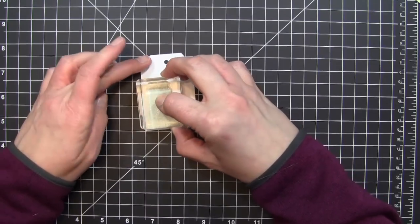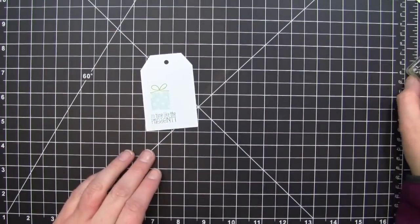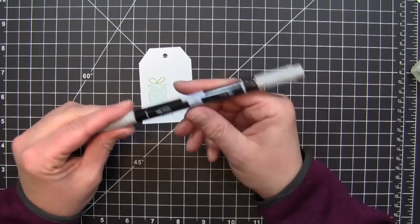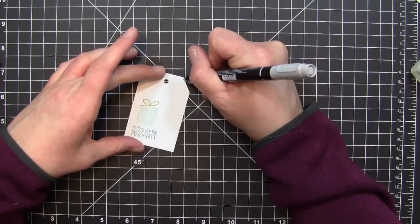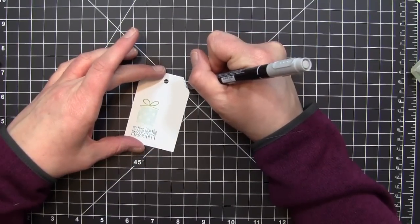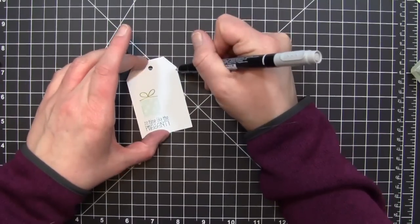I'm going to stamp that down in the lower left-hand corner of my tag. Then I will take the Smoky Slate Stampin' Write marker and do a faux stitched line going around the whole outside of this tag. I thought it set it off perfectly.